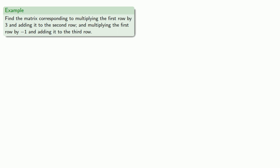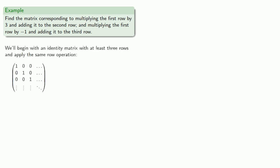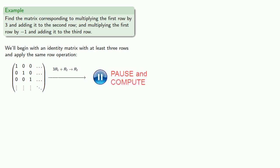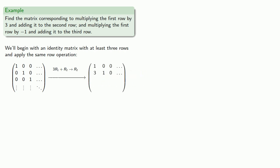We'll proceed in the same way: begin with an identity matrix with at least three rows and apply the same row operations — three times the first row plus the second, and negative one times the first row plus the third.